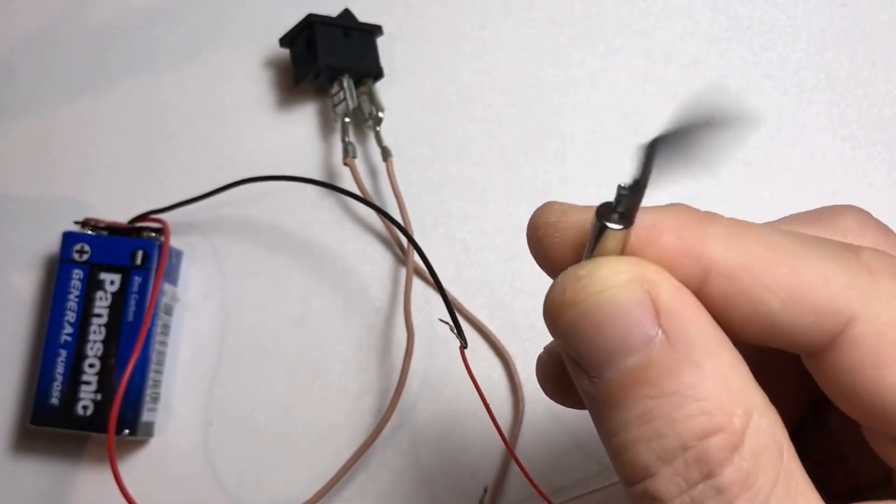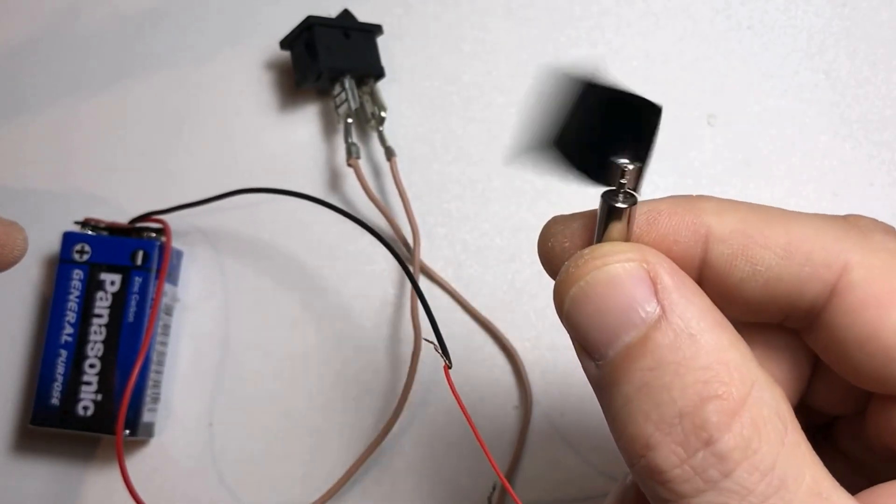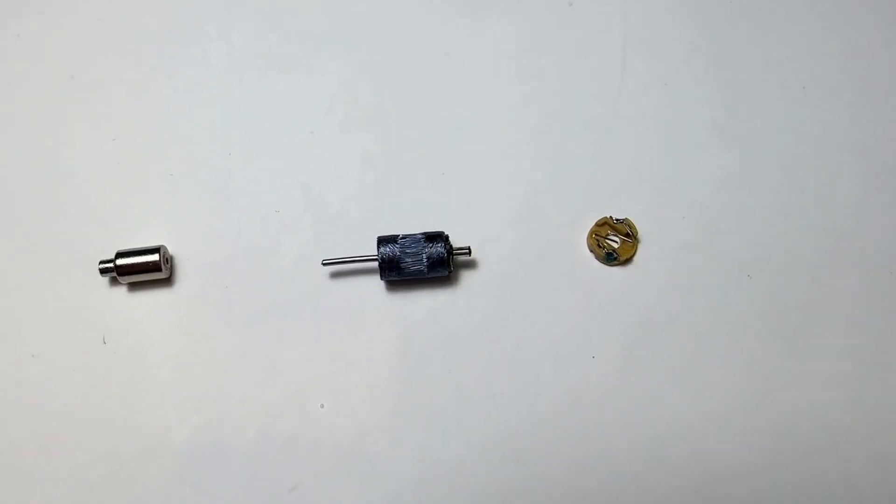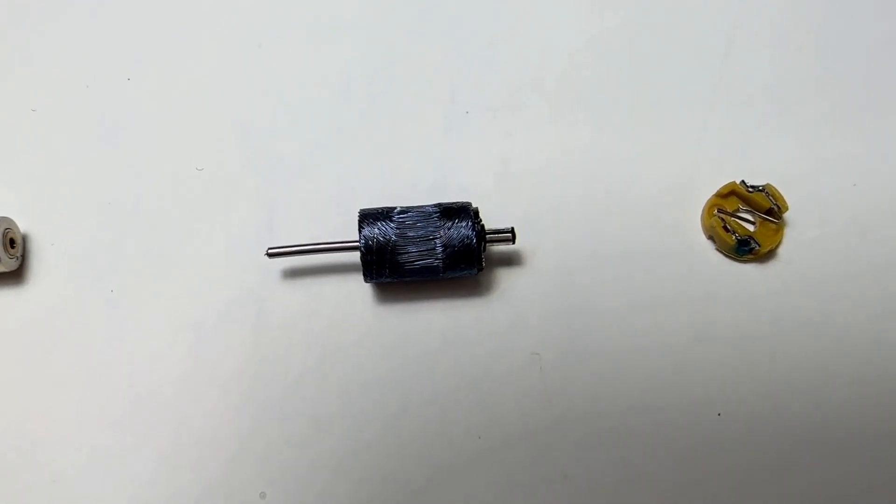Now, let's talk about the key characteristics that make coreless DC motors so interesting. Firstly, let's discuss construction. Unlike traditional DC motors, coreless DC motors discard the iron core in the armature winding.